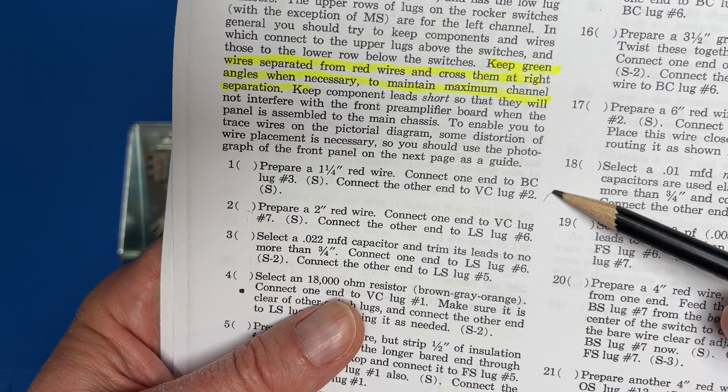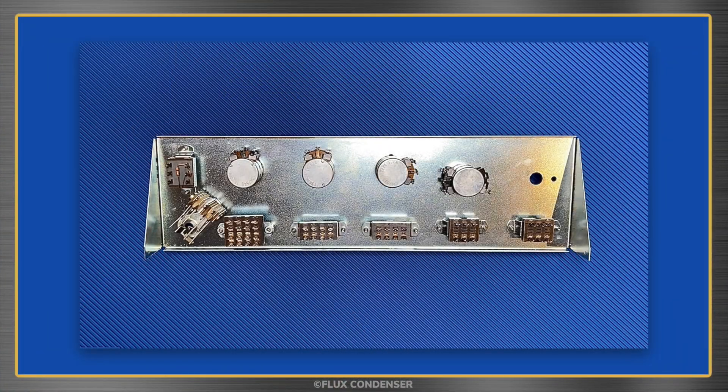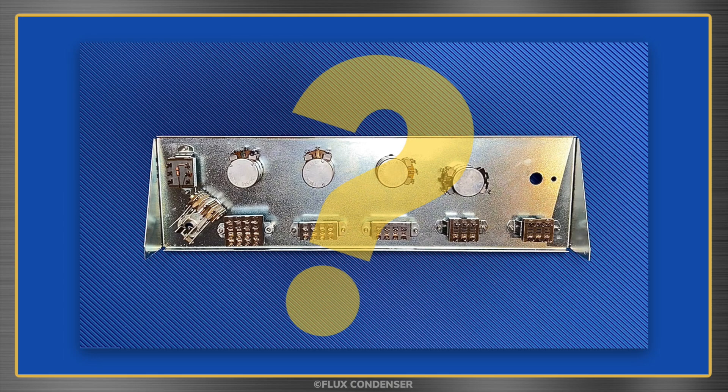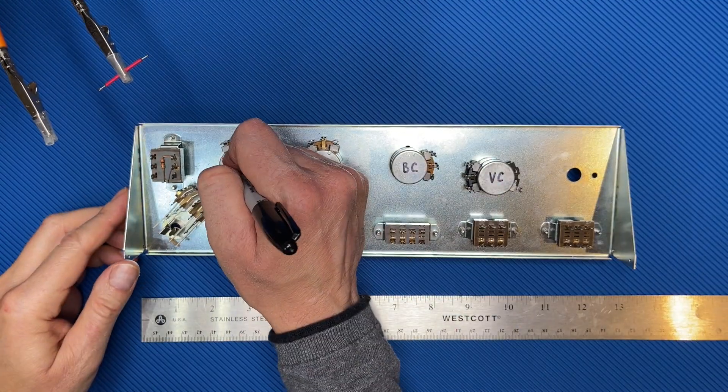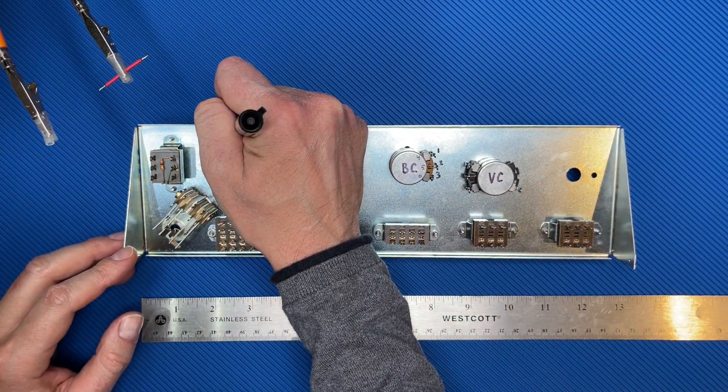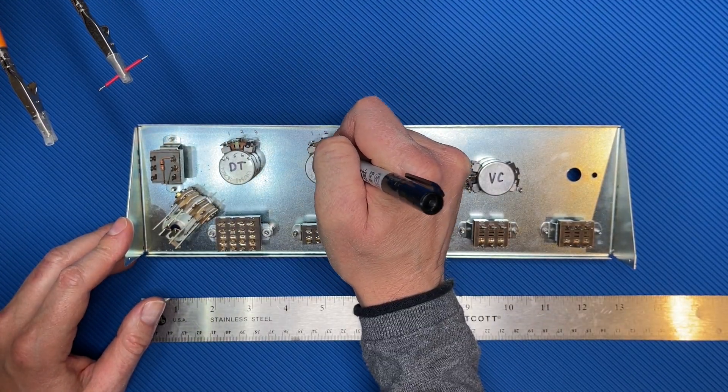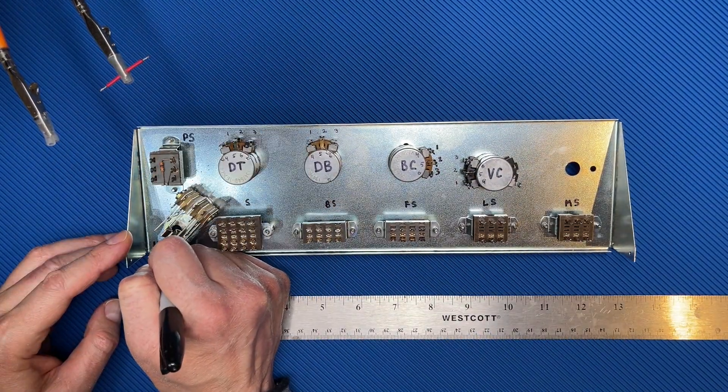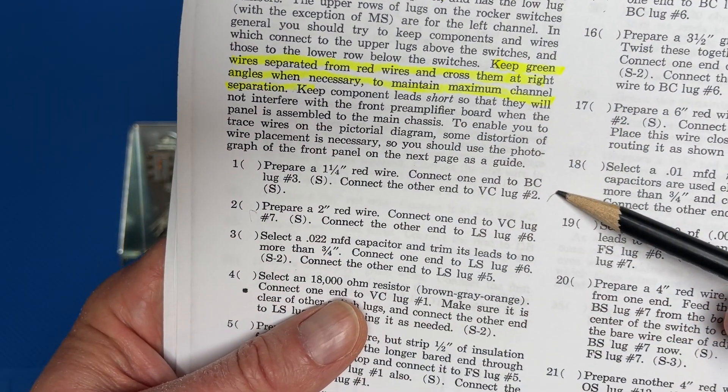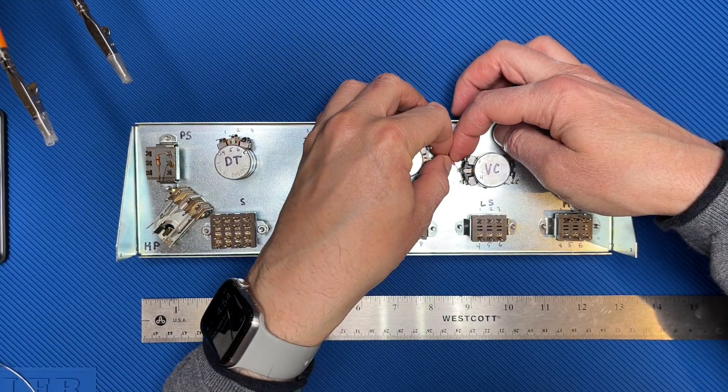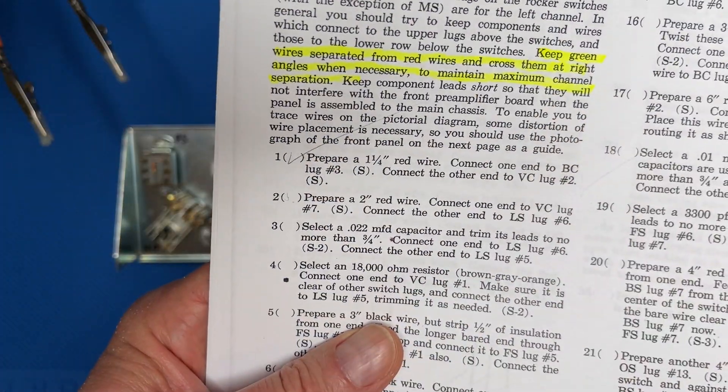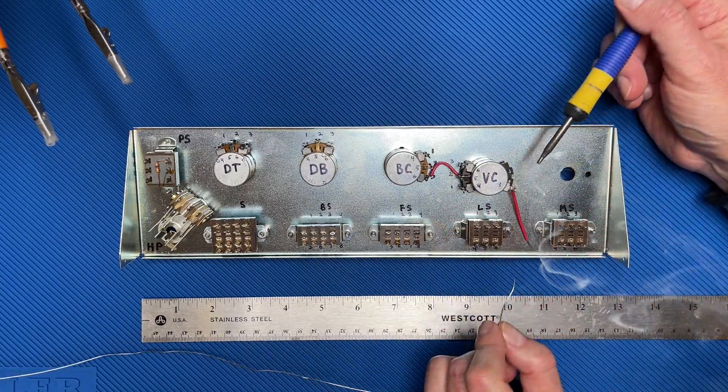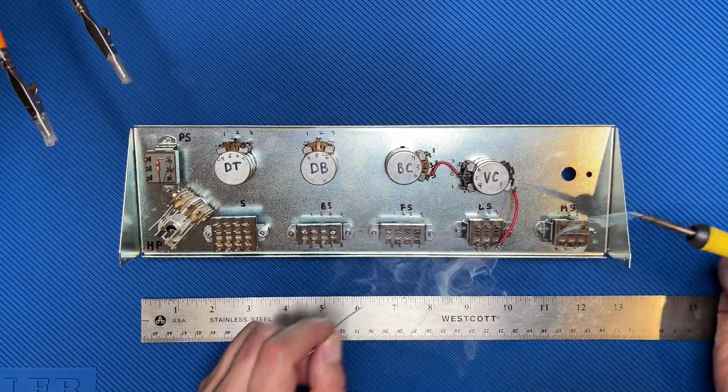Thanks Dynaco Lady. I think I'm ready to begin. Step 1: Prepare a 1¼ inch red wire. Connect one end to lug 3 of BC and the other to lug 2 of VC. Wait, which controls are BC and VC again? Okay, maybe I'm not quite ready to begin. Let me label the controls and switches to make it easier for you to follow along and for me to keep my sanity. Okay, back to step 1. Let's do it. Step 1 done. Step 2: Connect a 2-inch wire to VC7 and the other to LS6. Step 2 done.